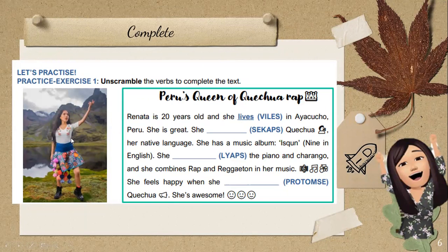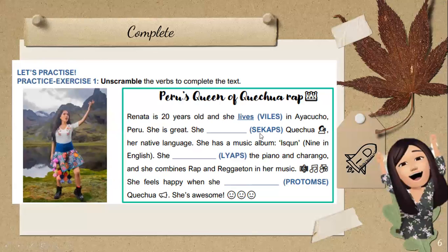Luego también tenemos una pequeña lectura para completar con los verbos en su forma de presente simple. Vamos a ordenar los verbos que están desordenados en Scramble y vamos a colocarlos. For example: Peru's queen of Quechua rap — Renata is 20 years old and she lives in Ayacucho, Perú. She is great. Completamos primero el verbo, lo ordenamos y lo colocamos.